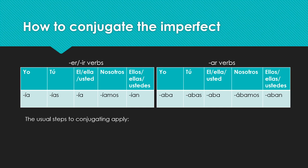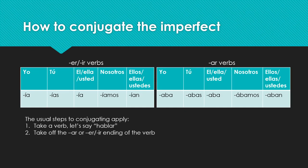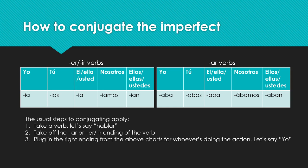The usual steps to conjugating apply — you should be relatively comfortable with conjugating verbs in Spanish 2. Take a verb, let's say 'hablar.' We take off the ending — it's either going to be an AR, ER, or IR ending. We take that off and plug in the right ending from the chart for whoever's doing the action. Let's say YO: we chop off the AR, slap on -ABA, and we end up with 'yo hablaba.' Simple as that.